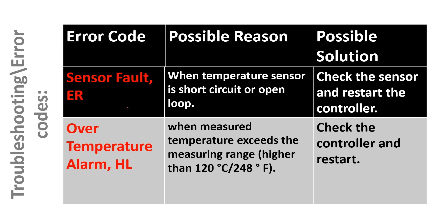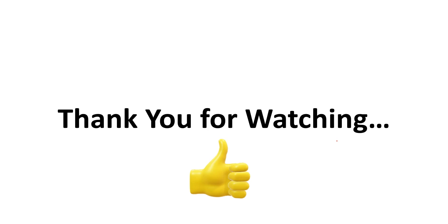These are the error codes this controller will display. When the ER error code is displayed, it means a sensor fault — the temperature sensor is short-circuited or open. The solution is to check the sensor and restart the controller. When HL is displayed, it means an over-temperature alarm — the measured temperature has exceeded the measuring range. The user needs to take corrective action and restart the controller.